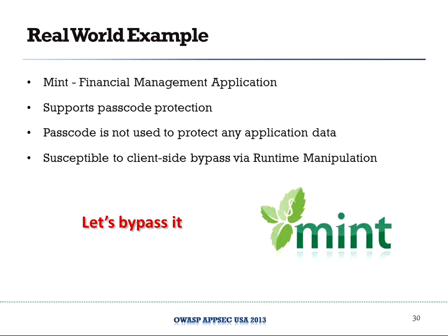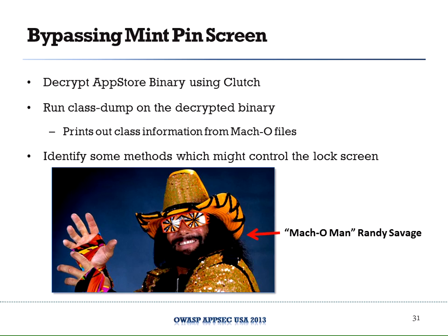Let's look at an example — the Mint application, which stores credit card info and has a feature to set up a pin code lock. I decided to try to bypass it, and it turned out to be pretty easy. Let's go through it step by step. You get the Mint app from the App Store — it's encrypted, but there are tools like Clutch that can decrypt it easily. Then I use class-dump to print out every single object and method within the app.